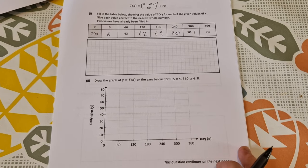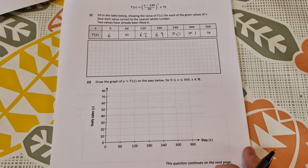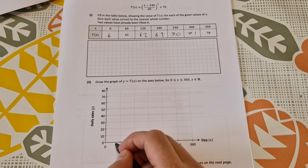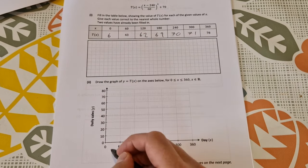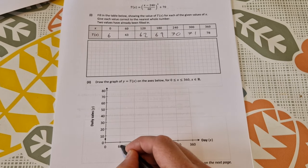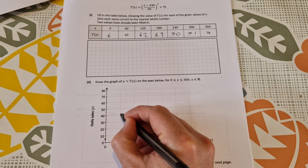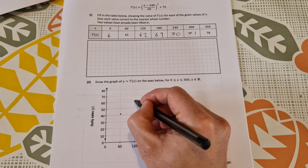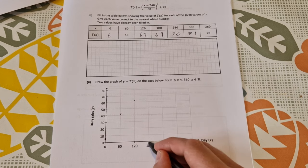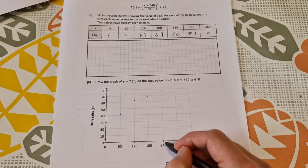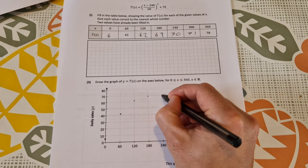Part 2: draw the graph of y equal to t(x) on the axis below. That's simply plotting all these points here. So we have 0, 6 which is there, we have 60, 43 which is about here, we have 120, 62 which is around about there, 180, 69 which is about there, 240, 70 which is about there.